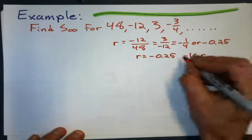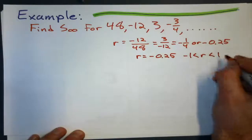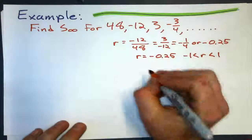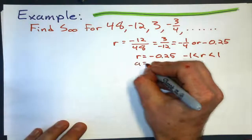And we go, oh, okay, that means it's between negative 1 and 1. That means my sum to infinity will give me an exact number. I don't know what yet. A is 48.